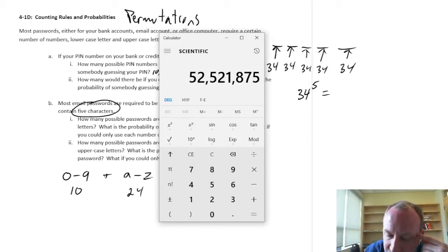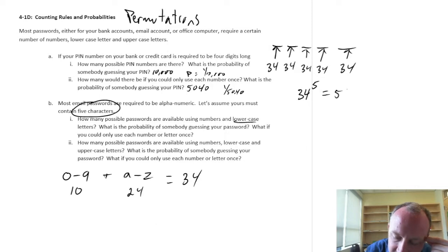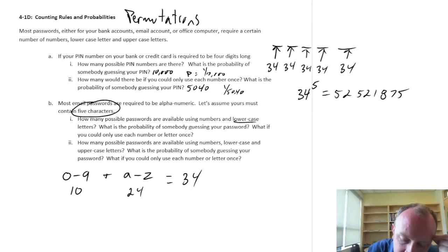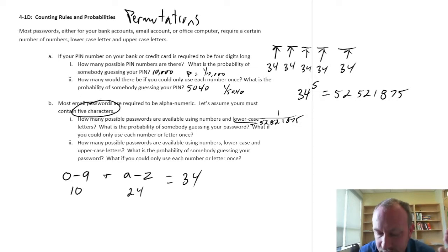Let me just make sure that I copied that out, right? 52,521,875. So, a lot. 52,521,875. What's the probability of somebody guessing it? Well, it's one out of 52, let's call it 52 and a half million. So, probability of somebody guessing my password when it's alphanumeric is tiny. Almost impossible, I would say.